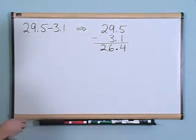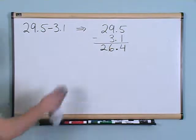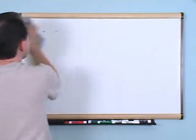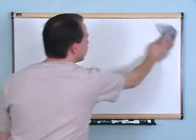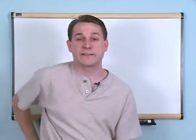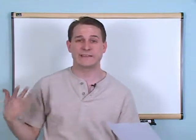That makes a lot of sense because you started with 29.5, which is roughly 29, and you're subtracting 3.1. So you know 29 minus 3 is going to be around 26. The answer is 26.4, which is just a little more than 26 — so the answer makes sense.